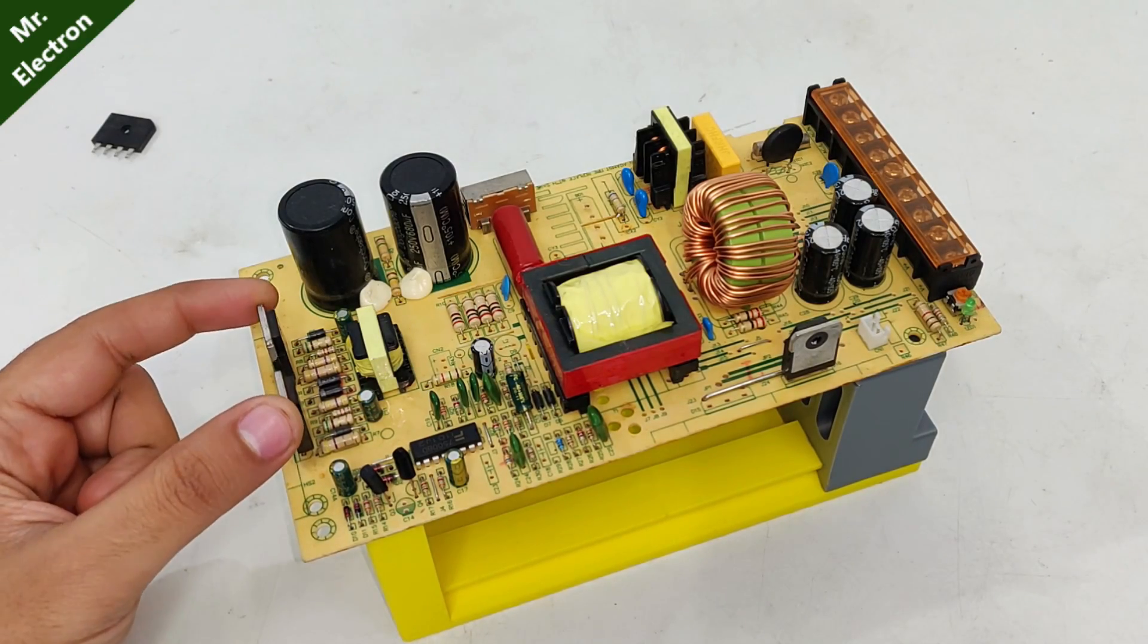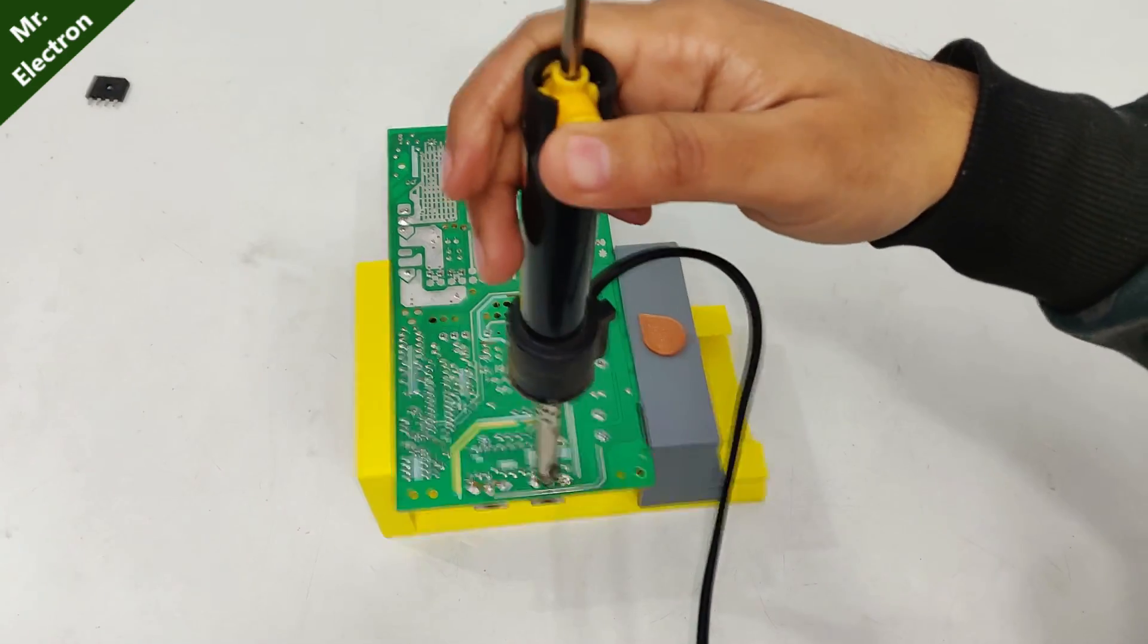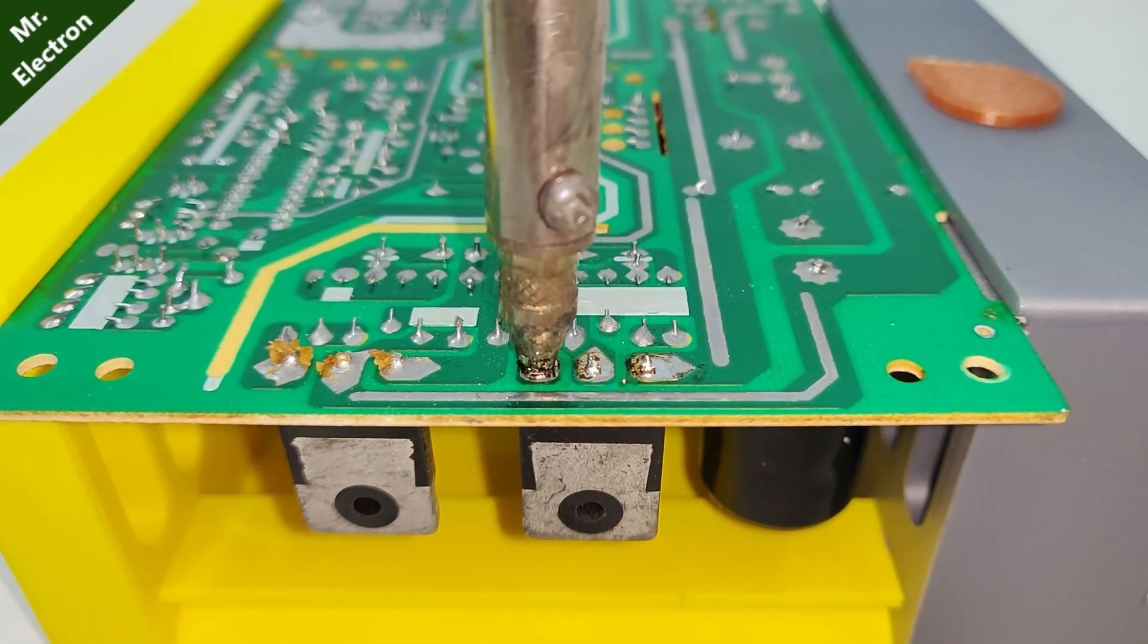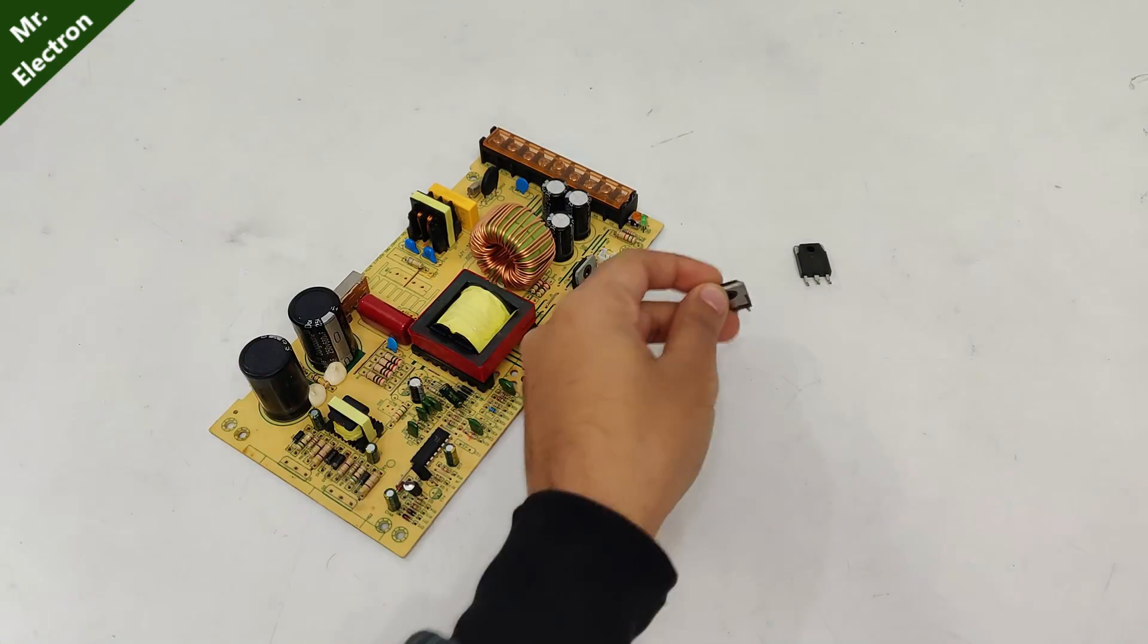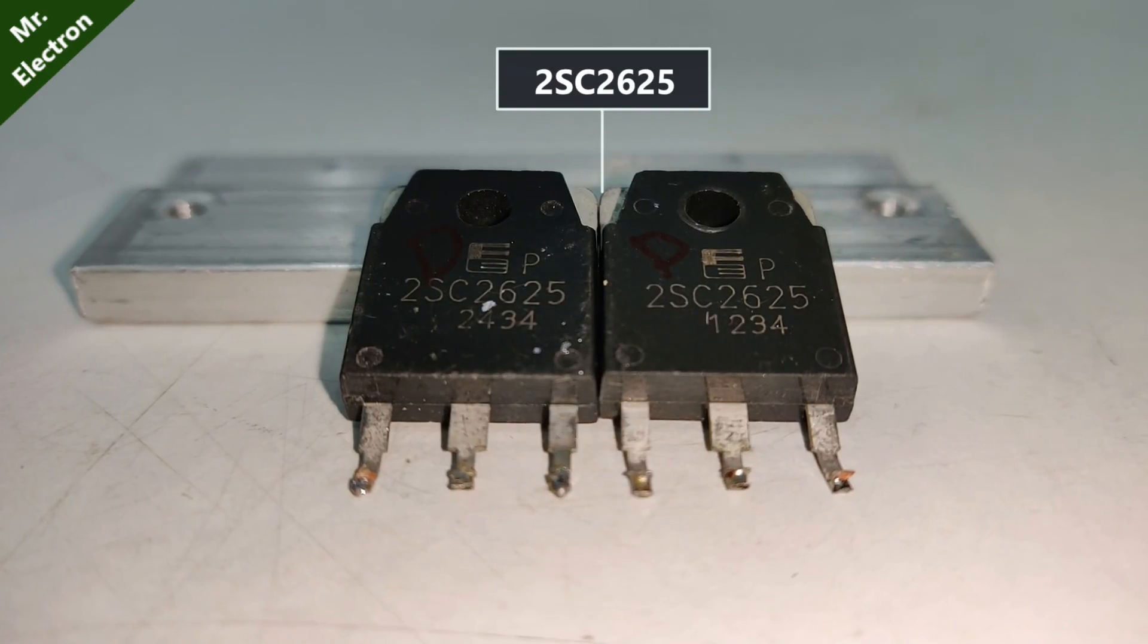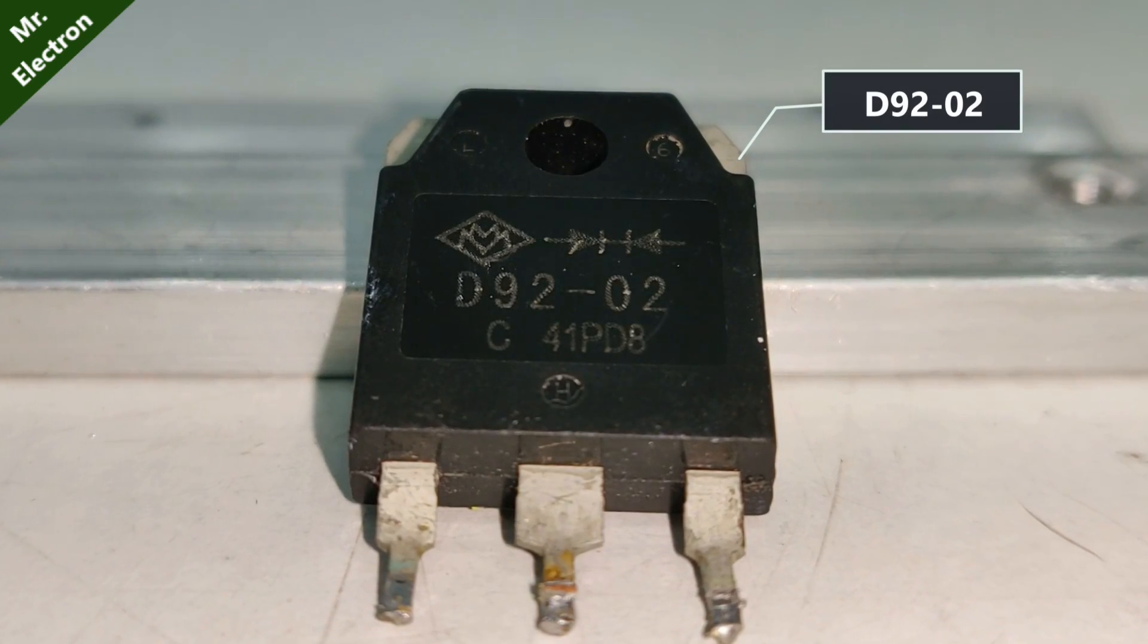So starting with these two transistors. So here I have removed both the high voltage switching transistors, 2SC2625 and the high speed rectifier D9202.